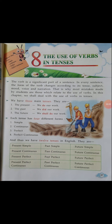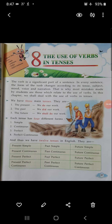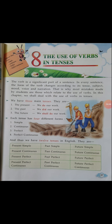Let's look at examples. In the present tense: 'We do our work' — here 'do' is the verb written in the present tense. In the past tense: 'We did our work' — 'do' has changed to 'did.' So the past tense of 'do' is 'did.'